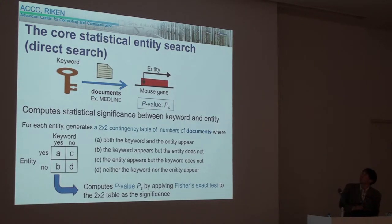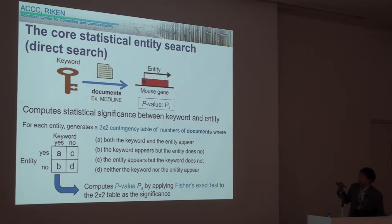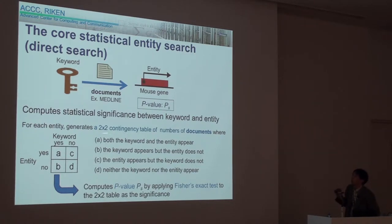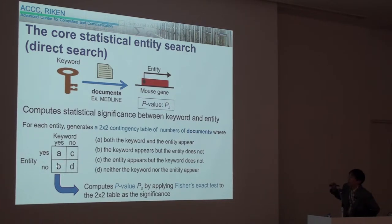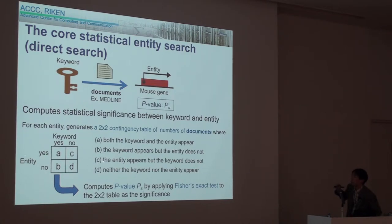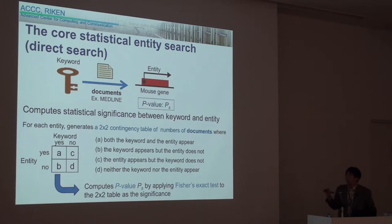This is the core statistical entity search named direct search. Direct search computes a statistical significance between keyword and entity using the relationship between entity and document. For each mouse gene, GRACE generates a two-by-two contingency table of number of documents: A where both keyword and entity appear, B where keyword appears but entity does not, C where entity appears but keyword does not, and D where neither appears. Fisher's exact test is applied to the table to compute a p-value as significance between keyword and entity.